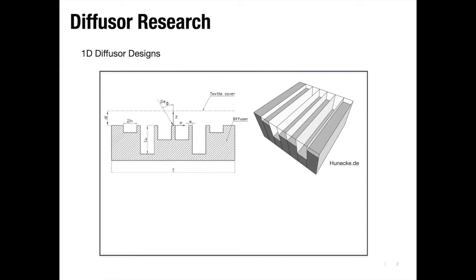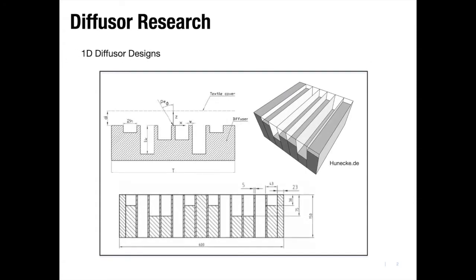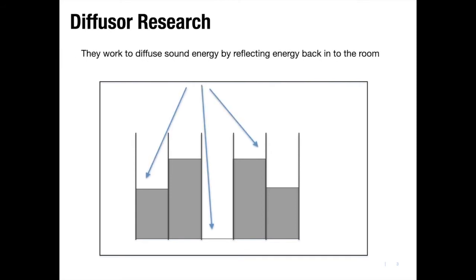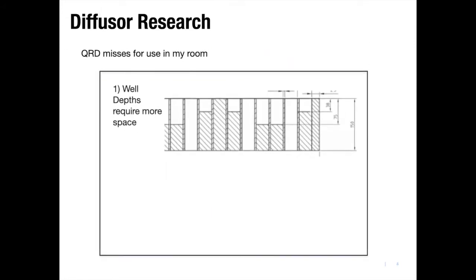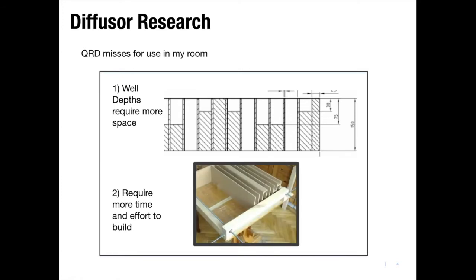In my research, I looked at various quadratic residue diffuser designs, known as QRD, with different well depths. These diffuse the sound energy by reflecting energy back into the room from wells of different depths. However, I decided against using them for two reasons. One, they require more space within the room and this is a small room. Secondly, they take more time and effort to build.